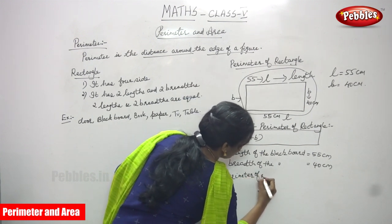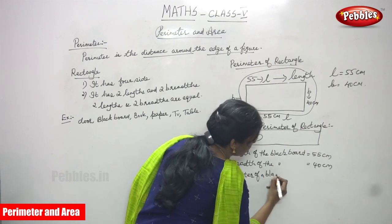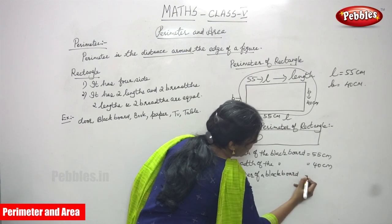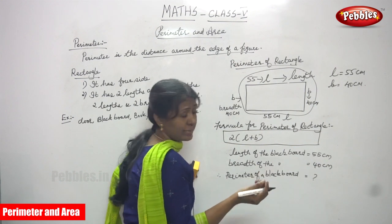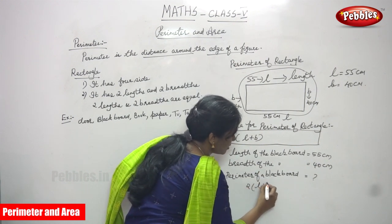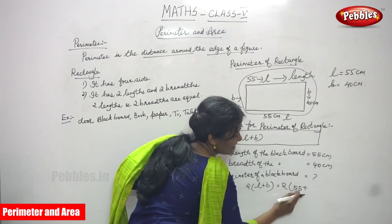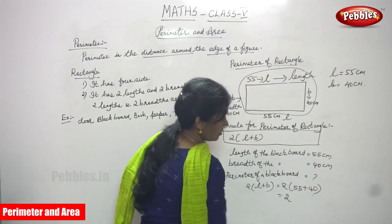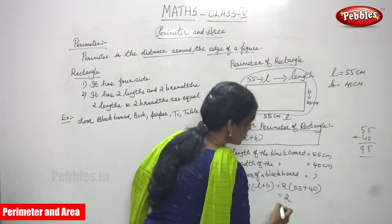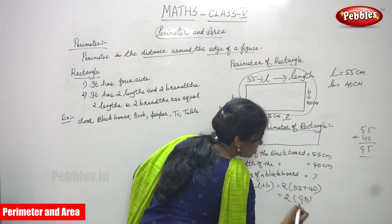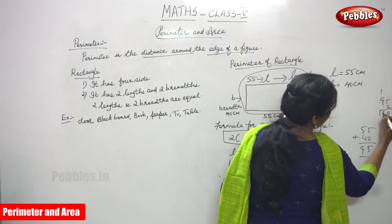Therefore, perimeter of the blackboard — you write 'blackboard' because that's the shape in question, but you apply the formula of perimeter of a rectangle because the blackboard is rectangular in shape. So formula: 2 into (L plus B) equals 2 into (55 plus 40). First, add within the bracket: 55 plus 40 equals 95. Then multiply: 2 into 95.